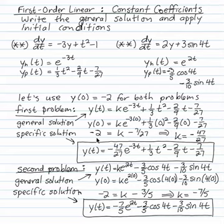And -2 is -54/27. So if I add 7/27 to both sides, k = -47/27. And the specific solution is -47/27 e^(-3t) + (1/3)t² - (2/9)t - 7/27.